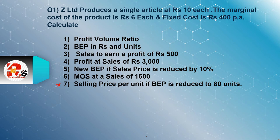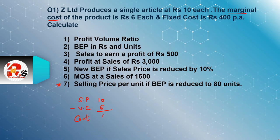First, if we look at the question, the selling price is rupees 10. The variable cost is the marginal cost, which is rupees 6. Selling price minus variable cost gives us contribution. So the contribution is rupees 4.